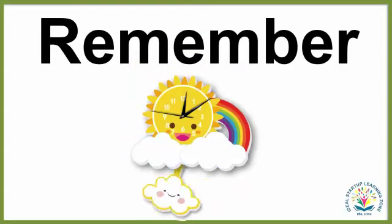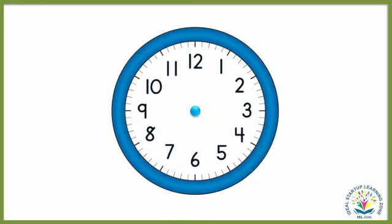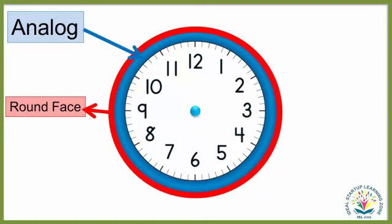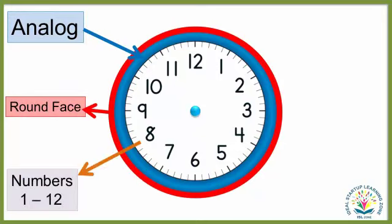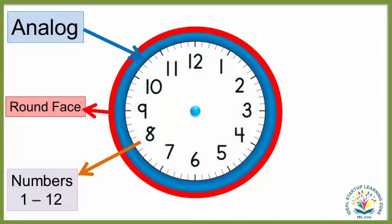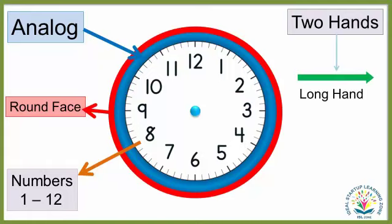But first you need to remember a few things about a clock. It is an analog clock. It has a round face. It has numbers 1 till 12: 1, 2, 3, 4, 5, 6, 7, 8, 9, 10, 11, 12. It has two hands, and sometimes three — a long hand and a short hand.